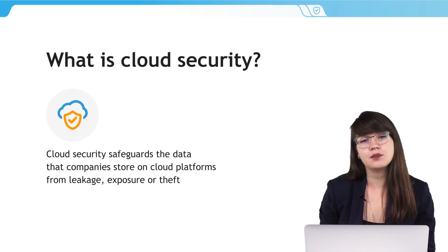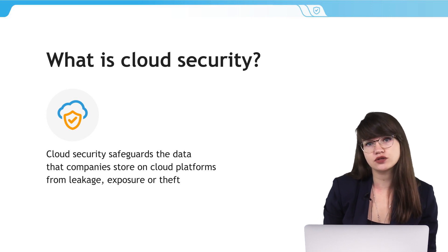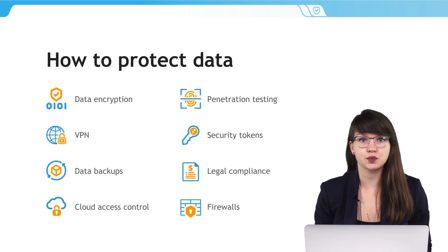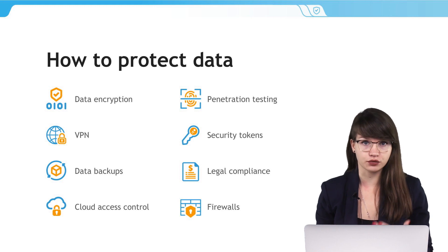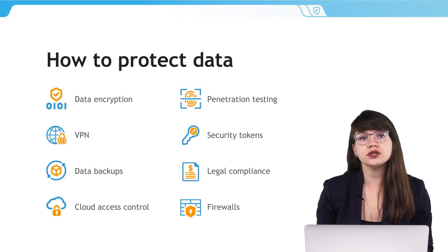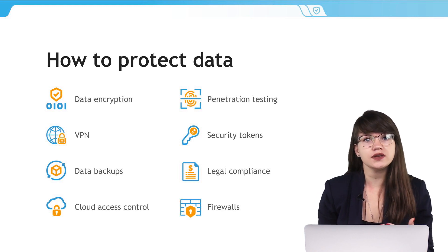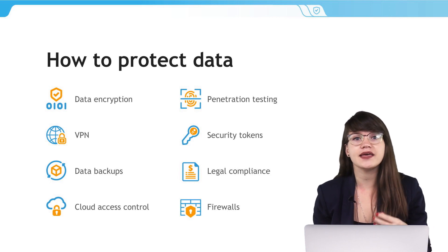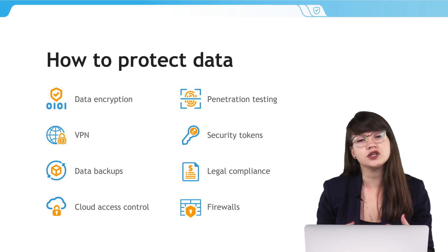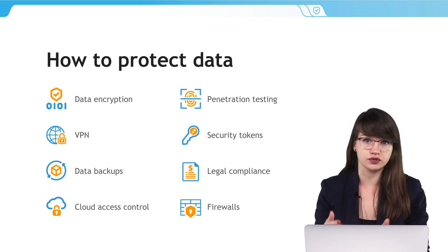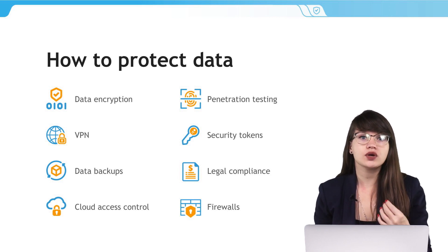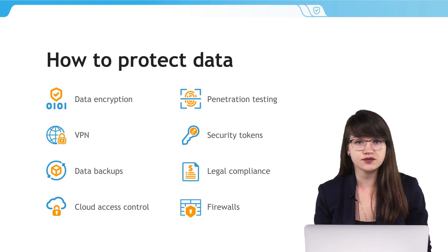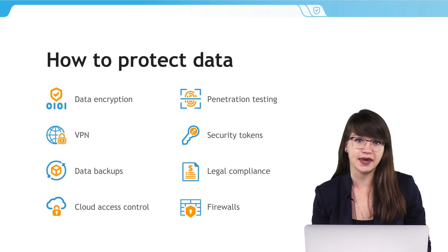Here are the actions that companies can take to implement cloud security. Data protection with the help of encryption will ensure that even if the sensitive data have been exposed, the attackers won't be able to decode and use it. You can also protect information by securing its transfer with VPN.